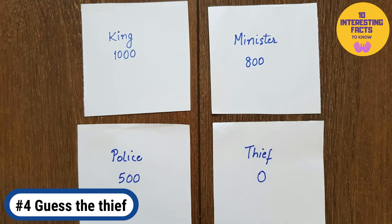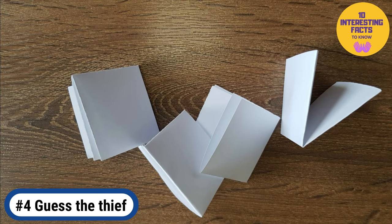Guess the thief! You will need four players for this role playing game. Make four paper slips: one for the king with a thousand points, one for the minister with 800 points, one for the police with 500 points, and the last one for the thief with zero points. Fold the paper slips and shuffle them up. Each player picks up a slip and opens it.